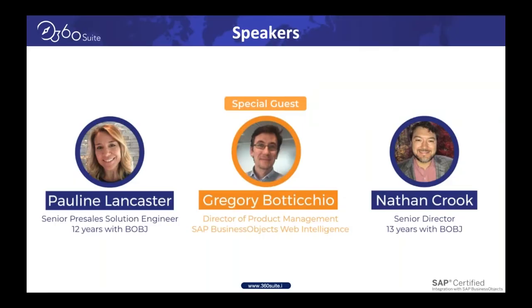First, we've got Pauline Lancaster, senior pre-sales solution engineer at GB and Smith 360 Suite, over 12 years of Business Objects both in consulting and the last three-plus years here at 360 Suite. And of course the guest of honor, Gregory Baticcio, Director of Product Management, SAP Business Objects Web Intelligence. And myself, Nathan Crook, Senior Director of Sales at GB and Smith, 13 years in the Business Objects world.